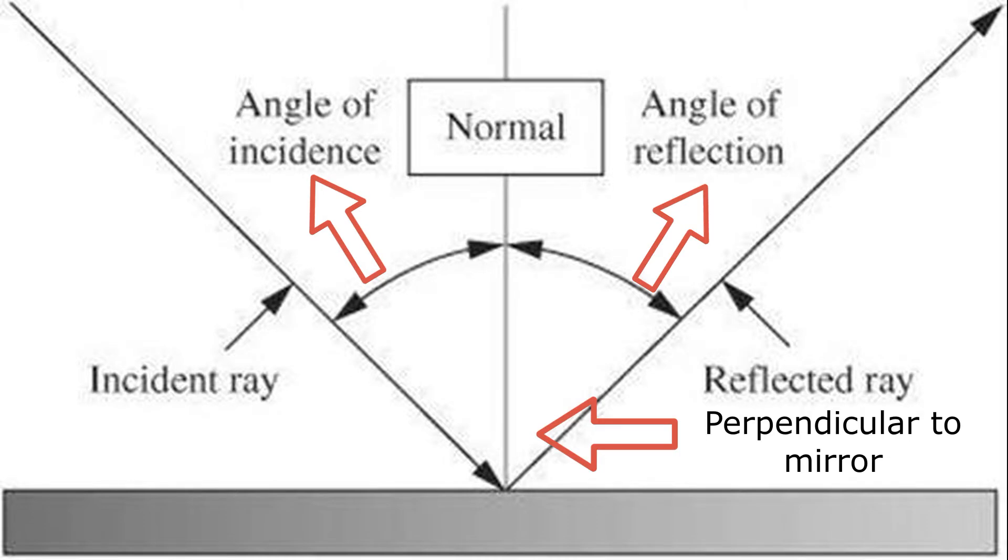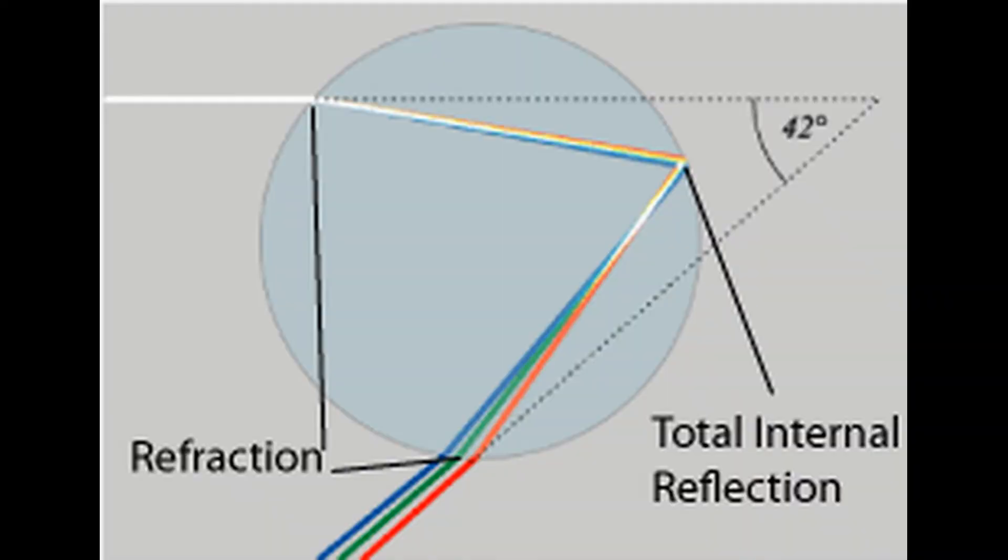The normal line is a line which is perpendicular to the surface of the object and the angle of incidence and the angle of reflection is the angles it forms with the normal line. So now that we know what these terms are, let us know more about total internal reflection.